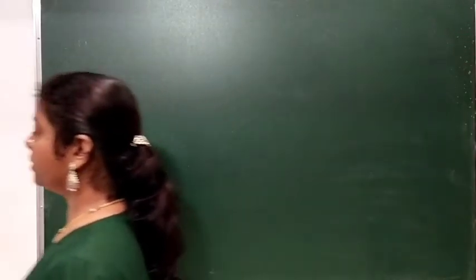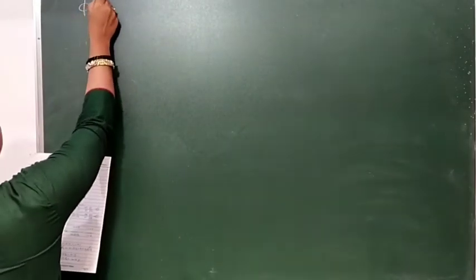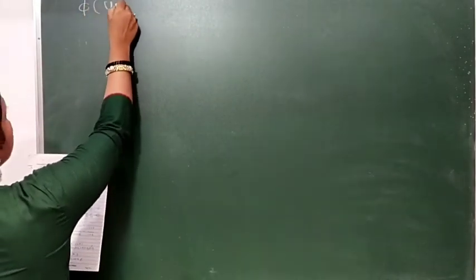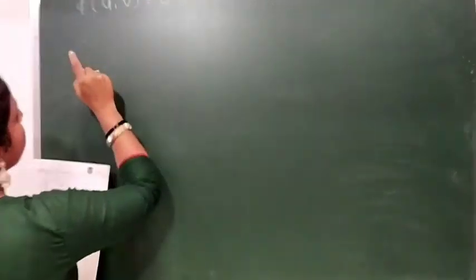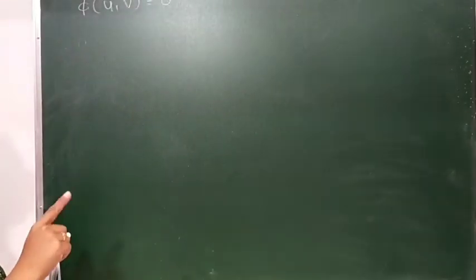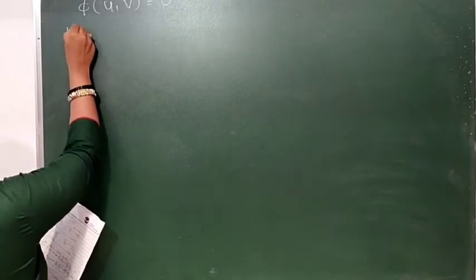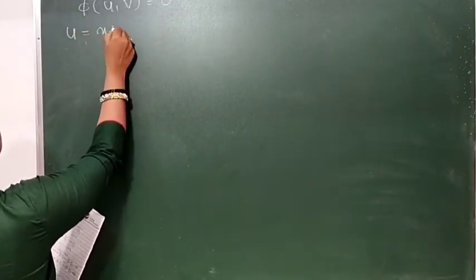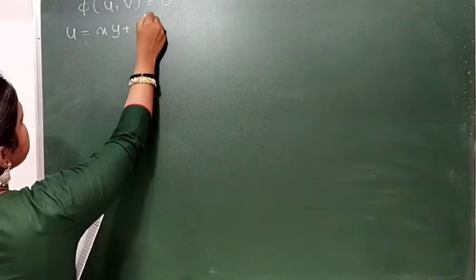The second example we have to consider on two functions. First of all, we have to take u of v, v is equal to 0. Here u you have to consider as x times y plus z squared.